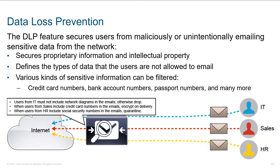Data loss prevention is a feature that a lot of folks are interested in. This gives us the ability to secure users from maliciously — and this is a big one — unintentionally emailing sensitive data from the network. There are a lot of people with good intentions who have their heads in a lot of places, working on lots of different projects. Some are really sensitive, some are not. There's a good chance that somebody could mishandle data.